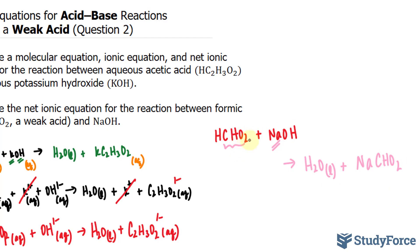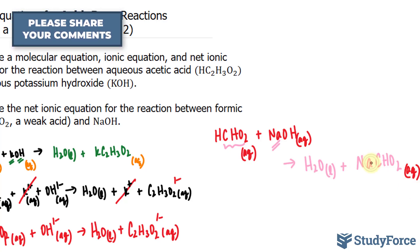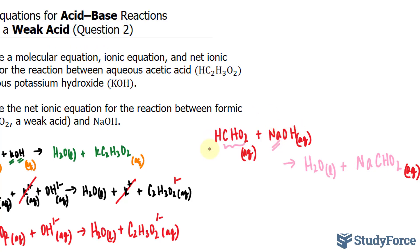Don't forget the states of each of these. This is aqueous, so I'll write down AQ, AQ, and AQ over here. Now I need to make sure that this is balanced. Let's see if it is. We have one sodium on the right side, one on the left side. I have one, two hydrogens, and over here I have two hydrogens plus one oxygen, and we have that one oxygen there. We also have one CHO2 and one on the left side. So this is perfectly balanced.